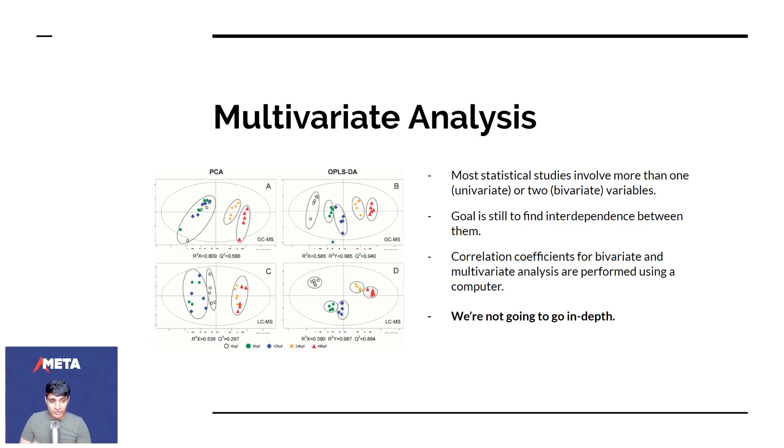The correlation coefficients for bivariate (two variables) and multivariate (more than two variables) are performed using a computer. You actually have many different tools that can do this. I think IBM has one tool that allows you to map out correlation coefficients and find patterns. We're not going to go in depth, I just want you to know that it's there and multiple things can be related.